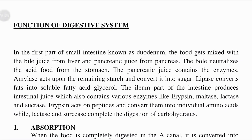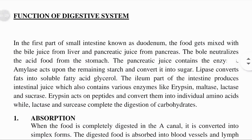Bile is a digestive juice that is secreted by the liver and stored in the gallbladder. The bile juice is mixed with liver and pancreatic juice from the pancreas, and it neutralizes the acidic food from the stomach. Your stomach is very acidic with a pH of 3.5 or below so it can break down food.